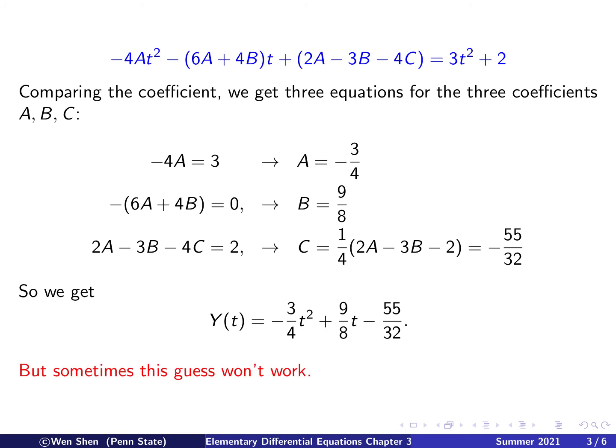To summarize: our guess works quite well. If the right-hand side G is a polynomial of a certain degree, we guess the particular solution to be the same form — also a polynomial of the same degree. It seems to work very well in this example. But life is not that simple; there are cases where this guess does not work. Let's take a look.